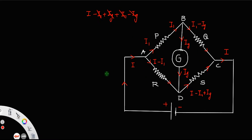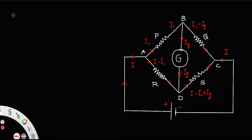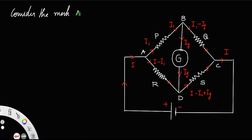You should always check the law of conservation of charge. Now we have to apply Kirchhoff's loop rule. You can take any closed mesh. Let us consider the closed loop mesh A, B, D, A — moving in the clockwise direction. Moving from A to B means we are moving along the direction of current I1.